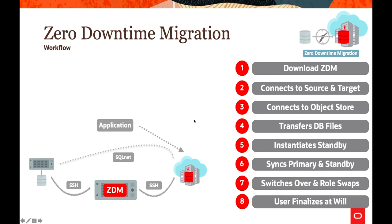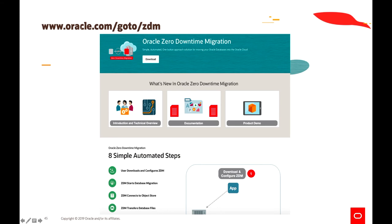To summarize the overall workflow, the process starts with downloading the ZDM software, connecting to source and target, establishing connectivity to object storage, transferring the database files, instantiating standby, synchronizing primary and standby, performing the role reversal using Data Guard's switchover capability, and then deciding whether to proceed on the new platform. For more information, you can visit the Oracle website at oracle.com/goto/ZDM, which covers the various steps involved in cloud migration.